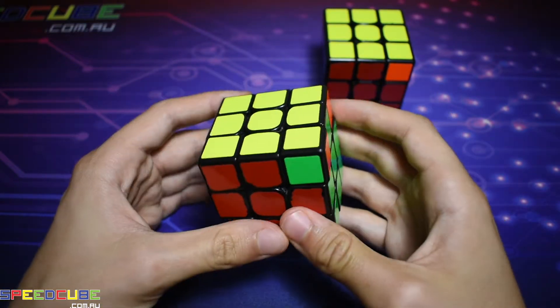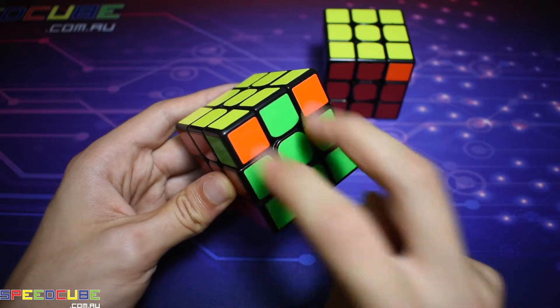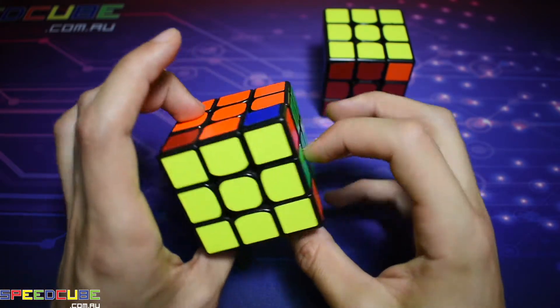This is the A permutation. It's an adjacent corner swap PLL. As you can see there's one pair of matching corner stickers and there are no other pairs.